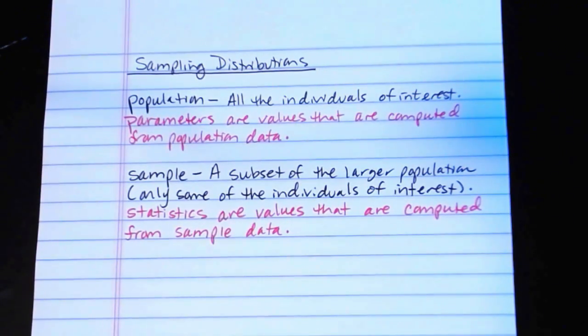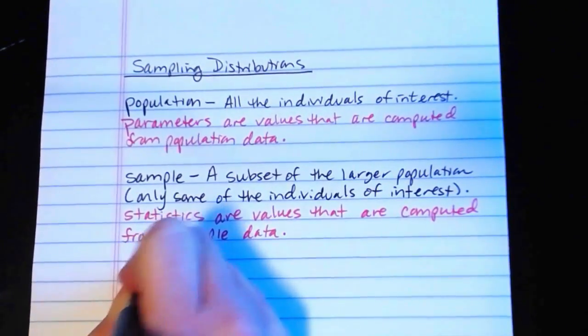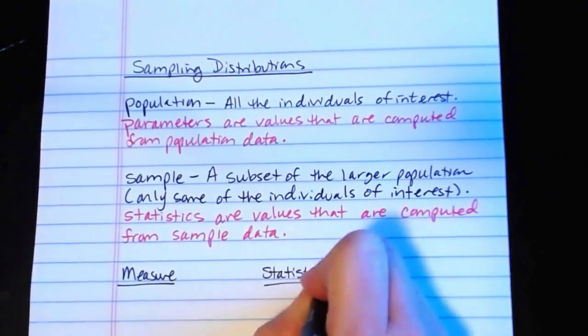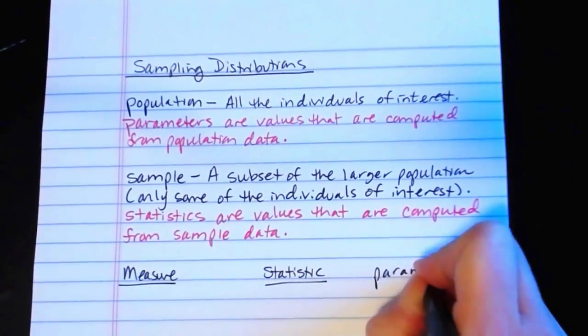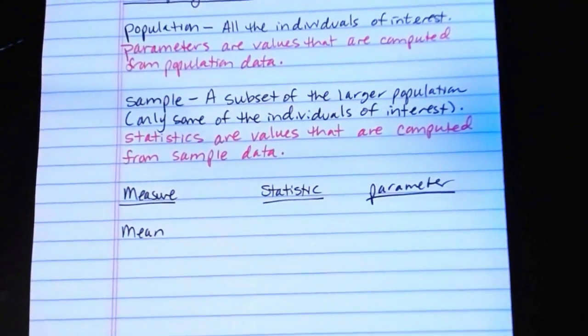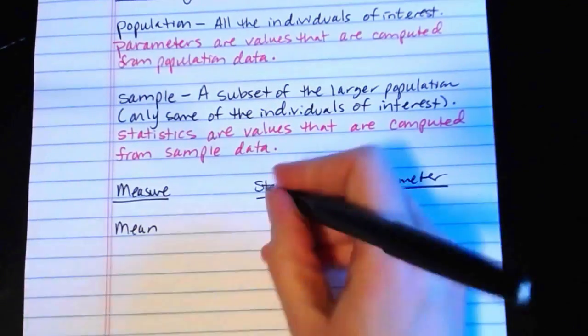From here on out we're going to be dealing a lot with problems where we might have information about both statistics and parameters in the same problem. And that can get very confusing. You wouldn't want to refer to just the mean because it wouldn't be clear whether you were talking about the mean of the population or the mean of the sample. And so instead of referring to something as simply the mean, for each different measure that we might be interested in, there is a symbol for that measure if it's a statistic versus if it's a parameter. Now if the measure of interest is a mean, if we have the mean of a sample, if we have a sample statistic, we use x bar as the symbol to denote that.